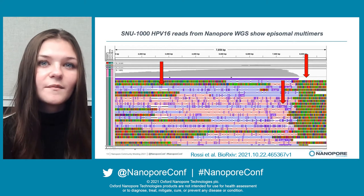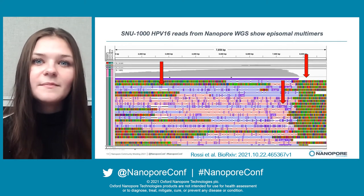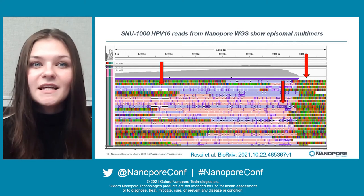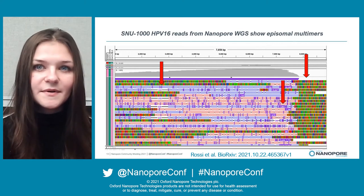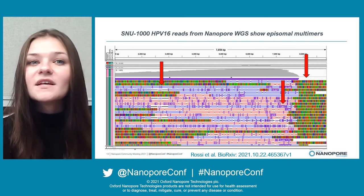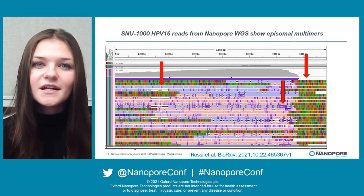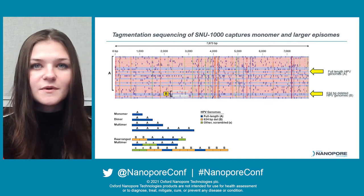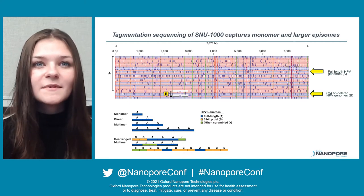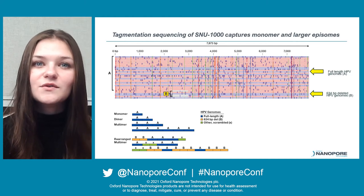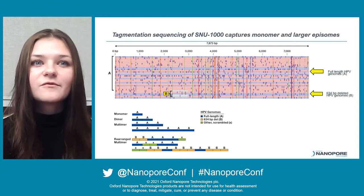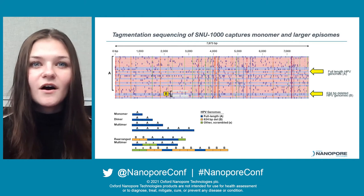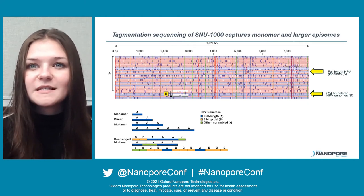Here are the HPV16 reads from whole genome ligation sequencing of linear SNU1000 DNA. The soft clipping reveals large insertions within the HPV epizomal reads. Some of these insertions are multiples of the 7.9 kilobase, meaning more than one full-length HPV genome is present in some epizomes. We coined these concatamers of genomes 'multimer epizomes.' Some epizomes also contain a 634 base pair deletion that removes portions of the E1 and E2 genes. Using a rapid sequencing protocol with tagmentation to directly add adapters via transposase, which can also add adapters to circular DNA molecules such as epizomes, we found reads of exactly 7.9 kilobases representing monomer epizomes, as well as dimers and multimers. About 10–15% of epizomes contain the 634 base pair deletion.